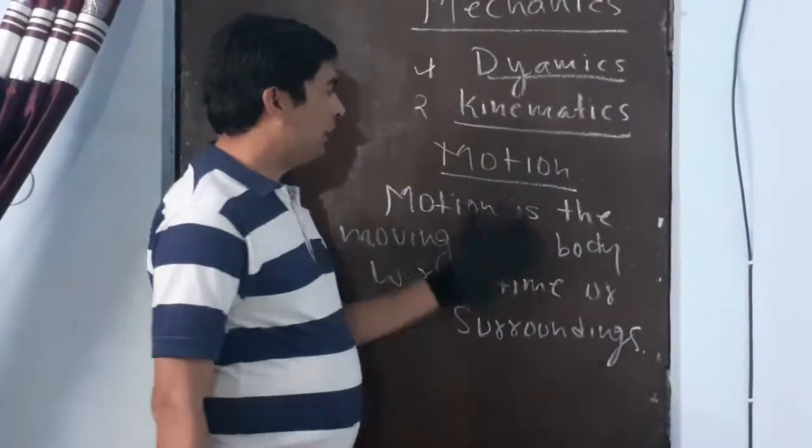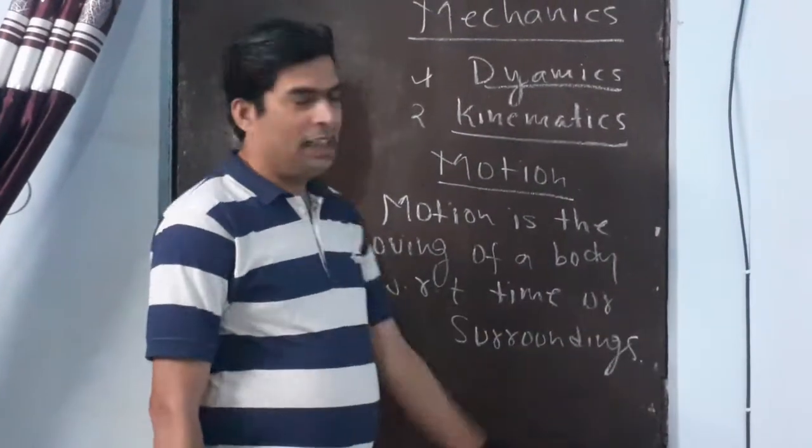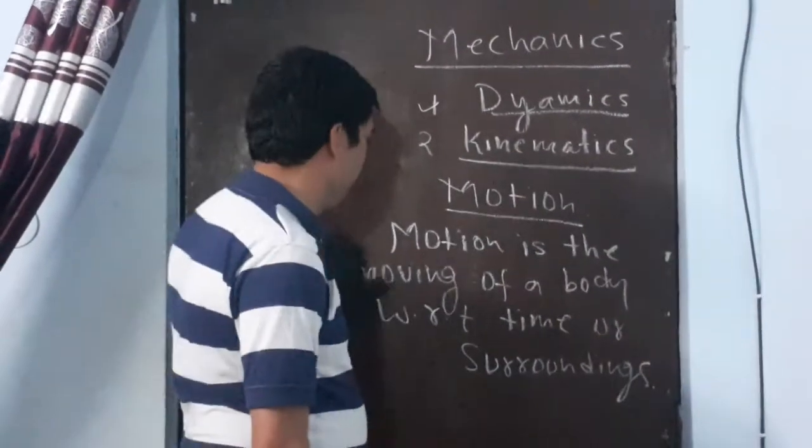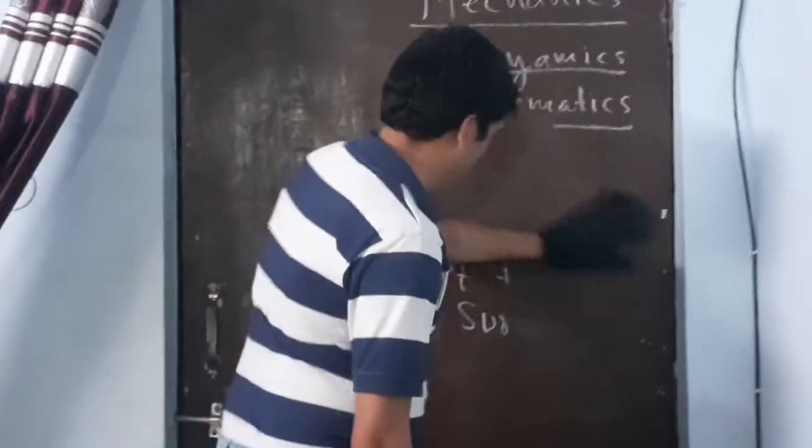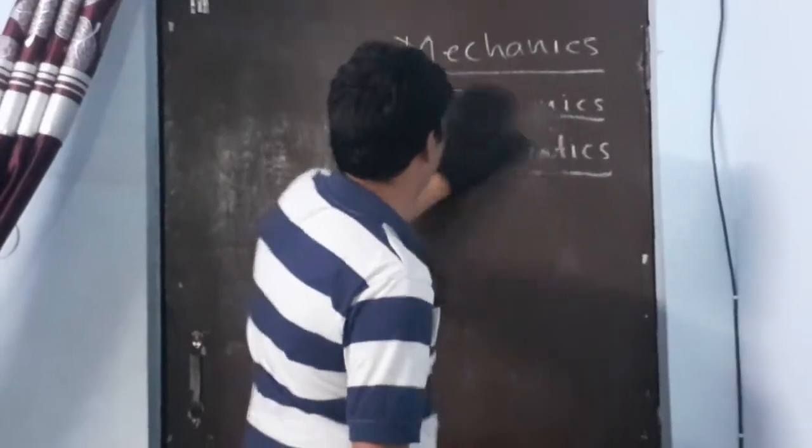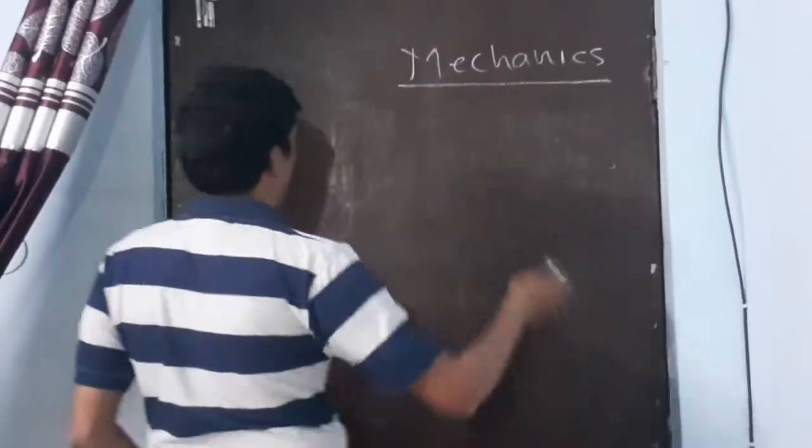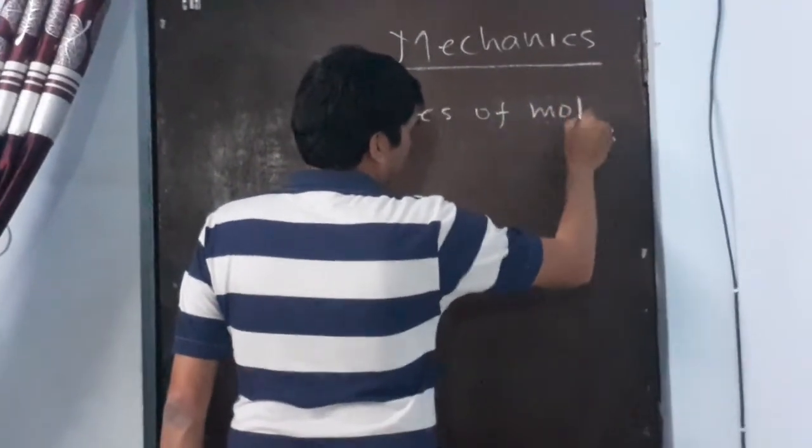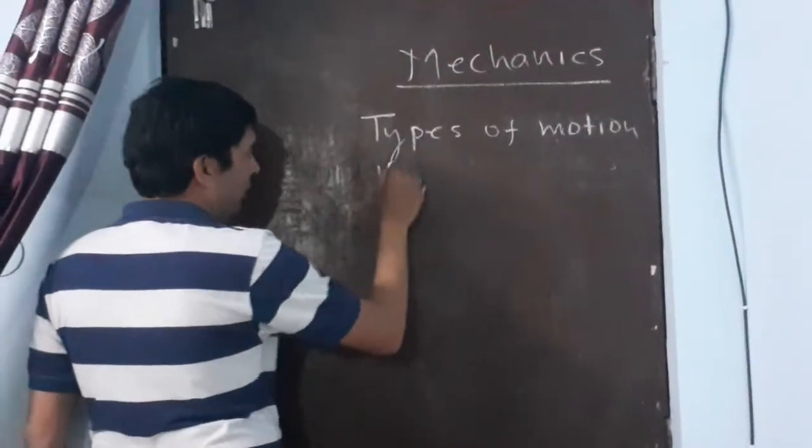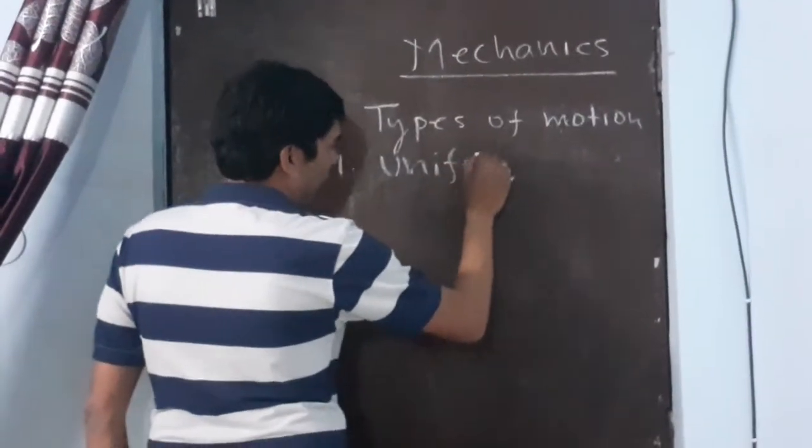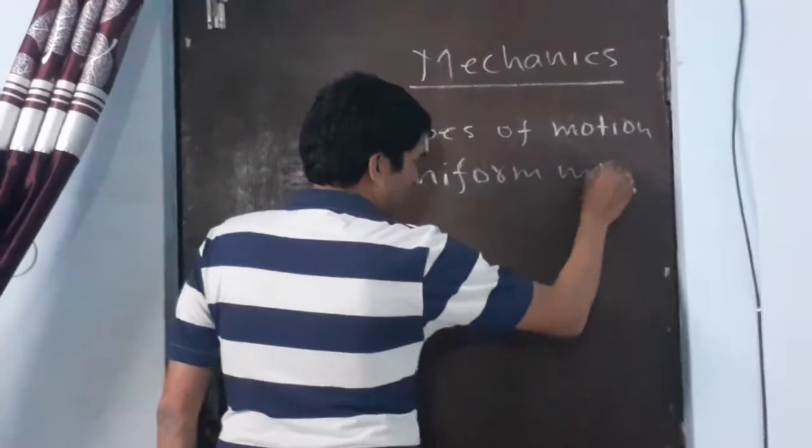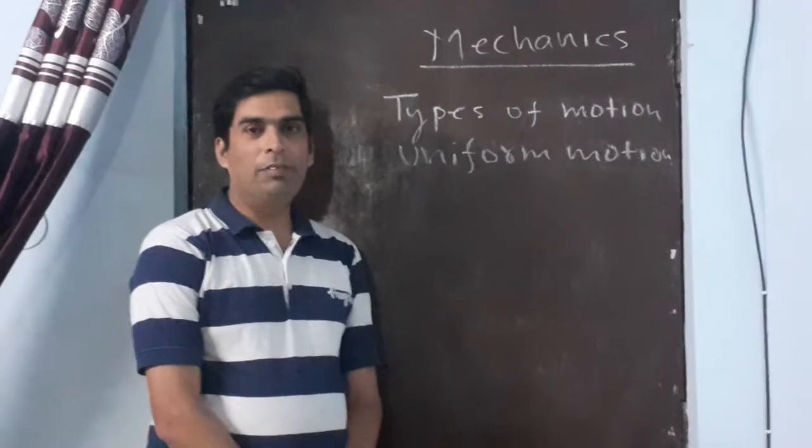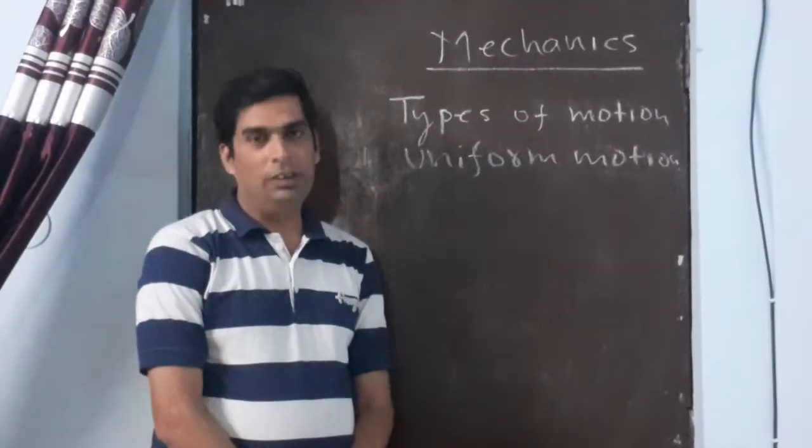Now motion is classified into several types, but according to the nature we are classifying motion in a few types. Types of motion: First, we have the uniform motion. When a body covers equal distance in equal time intervals, then the motion of the body is said to be uniform.